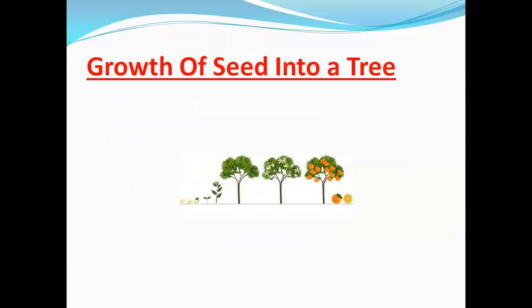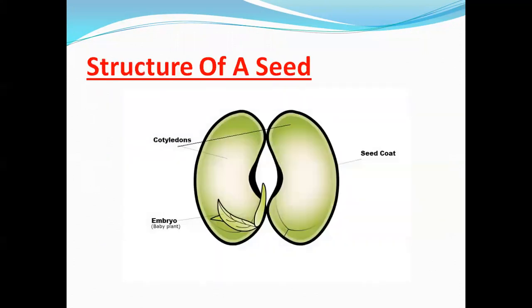But have you ever thought how a tiny seed converts into a big tree? To know this, let us first understand the structure of a seed. A seed has three important parts. The outer covering of a seed is called the seed coat — it is a protective layer. The seed contains a small baby plant which is known as the embryo. The third important part is two seed leaves that are also known as cotyledons. Cotyledons store food for the baby plant.